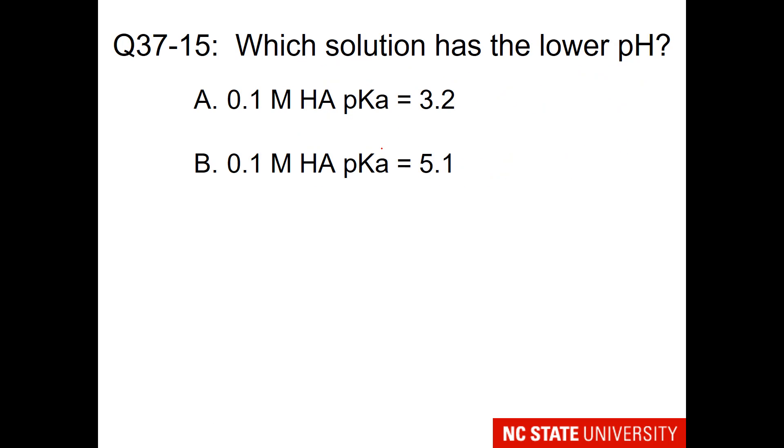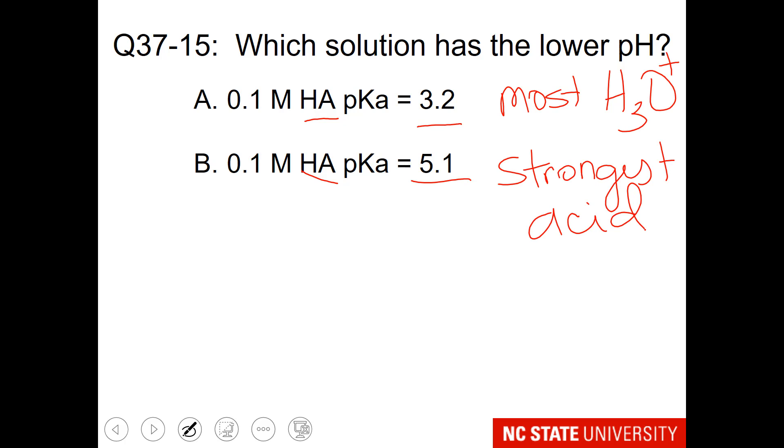And our last question. This time we are dealing with acids, and we are given the pKa. So the lower pH will have the most hydronium, which means it will be the strongest acid. So which one of these pKa's says strongest acid? The lower pKa or the higher pKa?